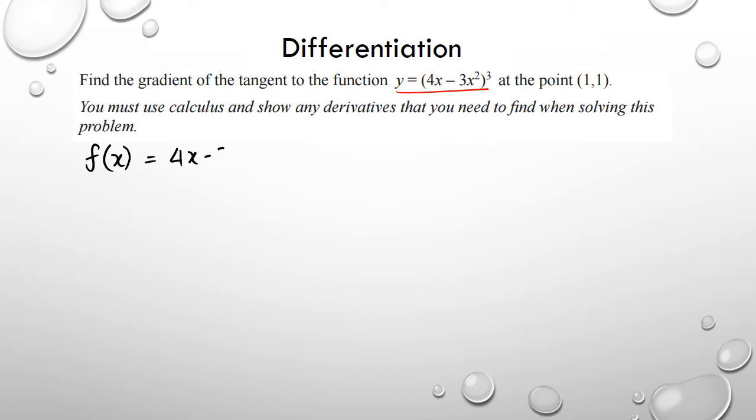Which is (4x - 3x²)³. If we differentiate this, we have to use chain rule. So it'll be 3 multiplied by (4x - 3x²)² multiplied by the differentiation of whatever's inside the bracket here, which happens to be 4 - 6x.